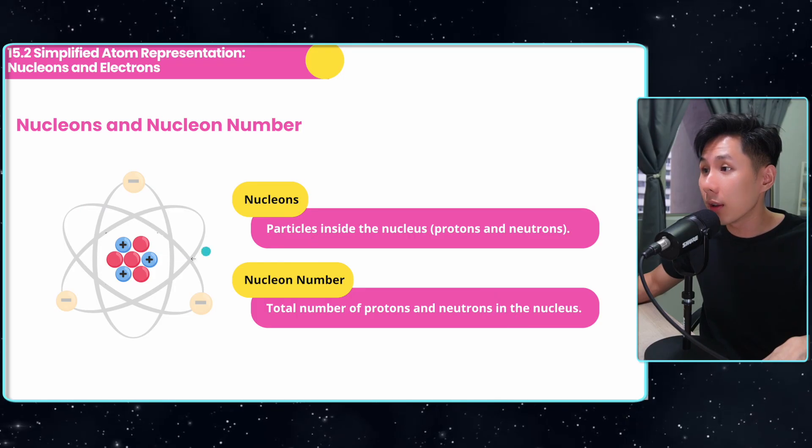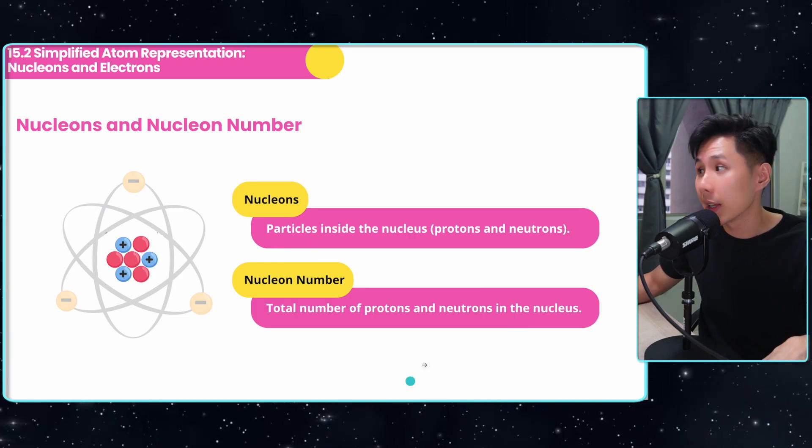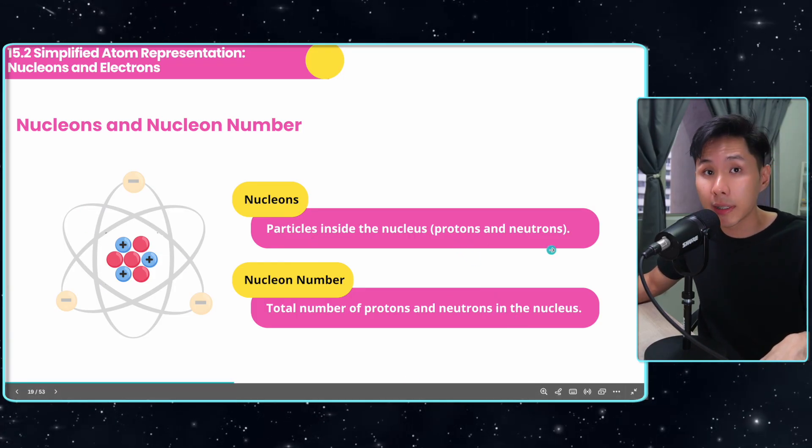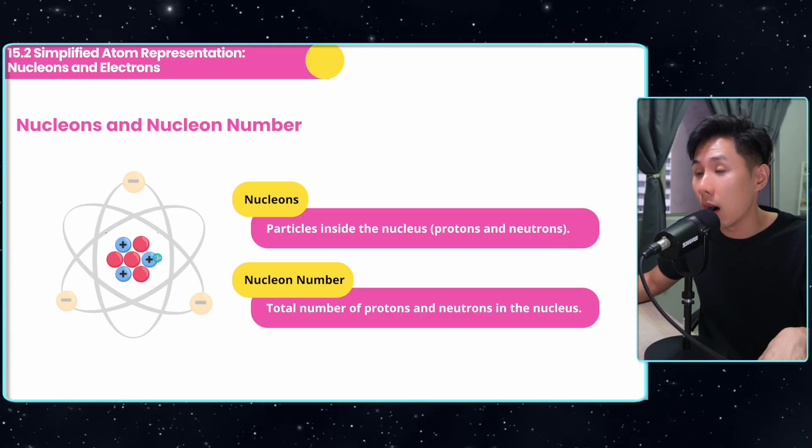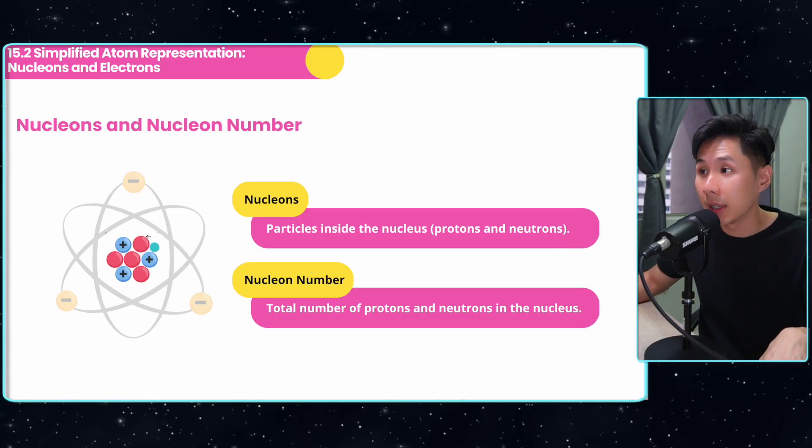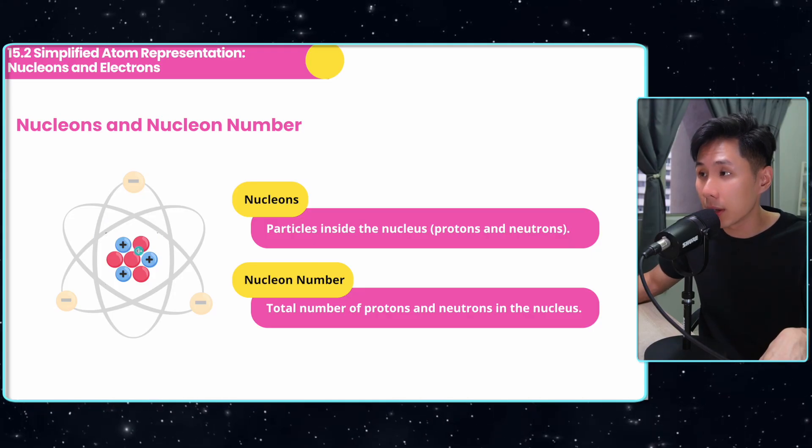Let's move on to nucleons. Nucleons are the particles inside the nucleus. It includes the protons and the neutrons, whereas nuclear number is just the number of protons and neutrons in the nucleus. So in this case, my nuclear number will be seven.